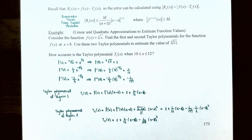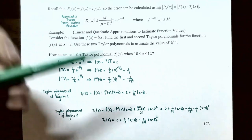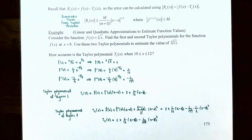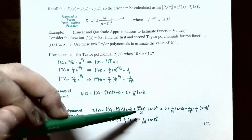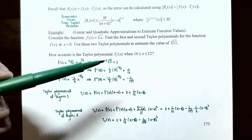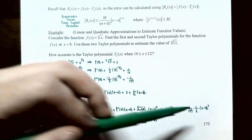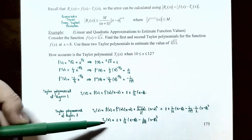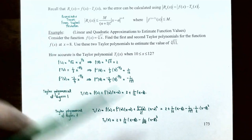The second degree Taylor polynomial is T_2(x) = f(a) + f′(a)(x − a) + f″(a)/2! · (x − a)². The first two terms are 2 + (1/12)(x − 8). The third term uses f″(8) = −1/144 divided by 2! = 2, giving −1/288 · (x − 8)². So T_2(x) = 2 + (1/12)(x − 8) − (1/288)(x − 8)².